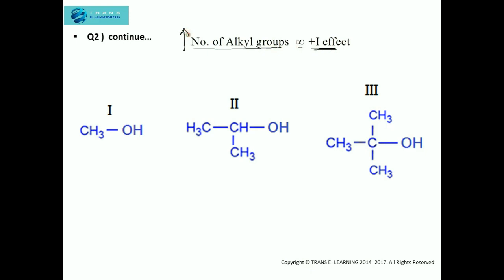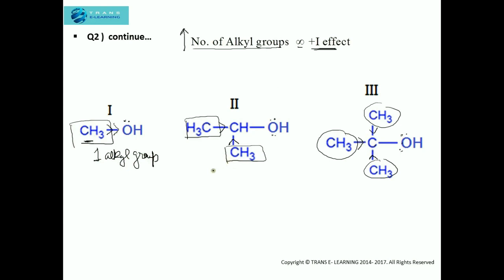More alkyl groups means more inductive effect, because each alkyl group releases electrons towards the oxygen atom, increasing the electron density on it. With one methyl group, there is comparatively less electron density on oxygen. With two methyl groups, the plus I effect and electron density are greater. With three alkyl groups, the inductive effect is maximum, as all three groups release electrons towards the oxygen atom.